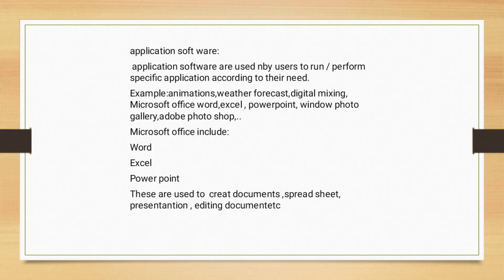Application software is used by a user to perform a specific application according to their needs. Examples include animations, weather forecasting, digital mixing, Microsoft Office — Word, Excel, PowerPoint — Windows Photo Gallery, and Photoshop. Microsoft Office includes Word, Excel, and PowerPoint.